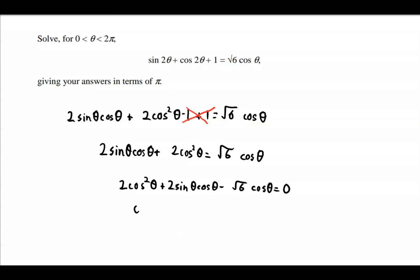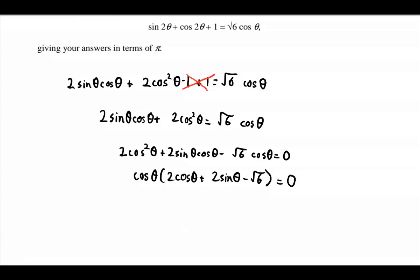We can factor out cos theta to give us cos theta multiplied by 2 cos theta plus 2 sine theta minus root 6, equal to 0. Now there are two cases. The first is when cos theta is equal to 0, and this gives us theta is equal to pi by 2 or 3 pi by 2.